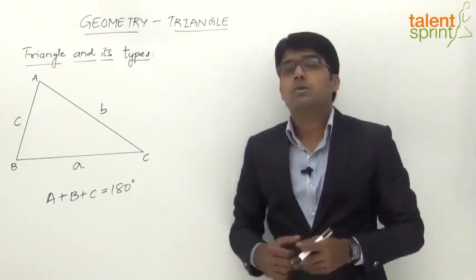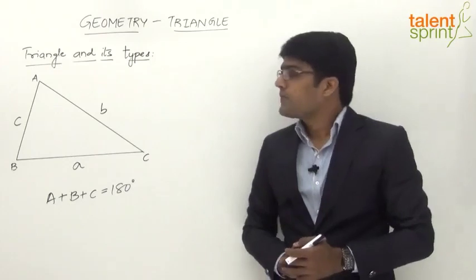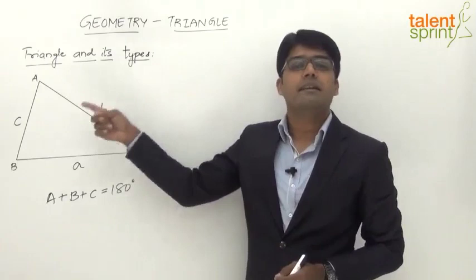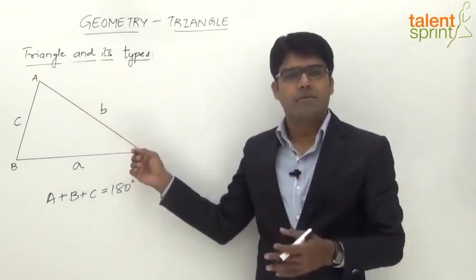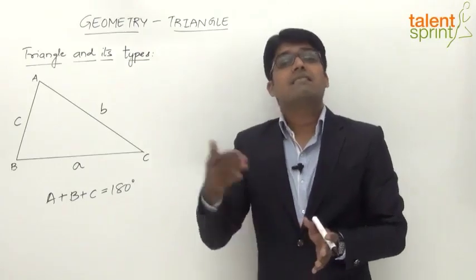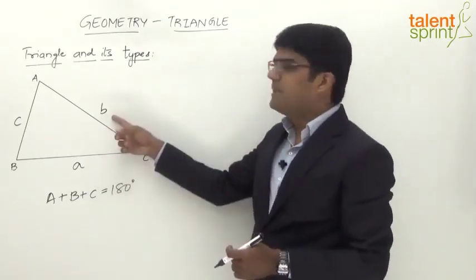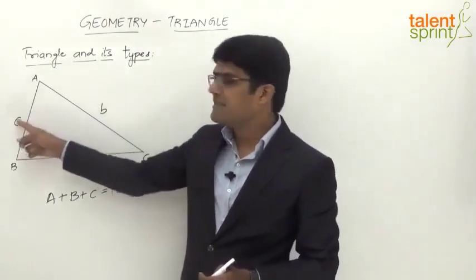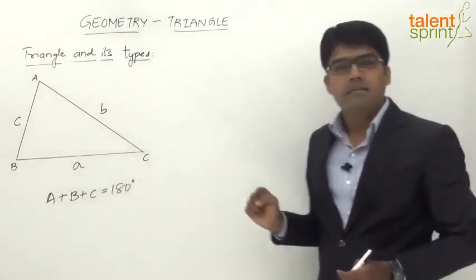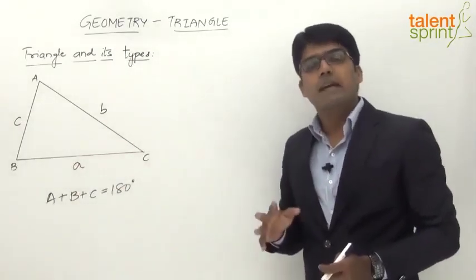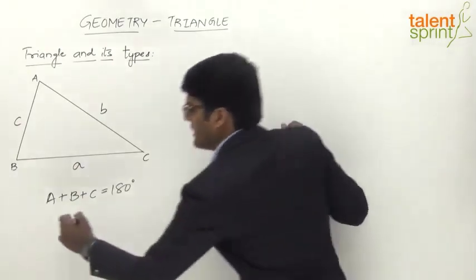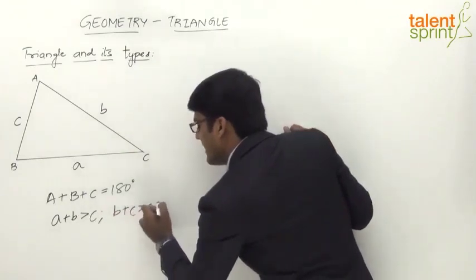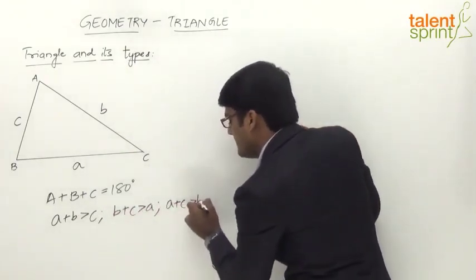The second point is with respect to the sides of a triangle. The sum of any two sides of a triangle will always be greater than the third side. For example, a plus b will be greater than c, b plus c will be greater than a, and a plus c will be greater than b.